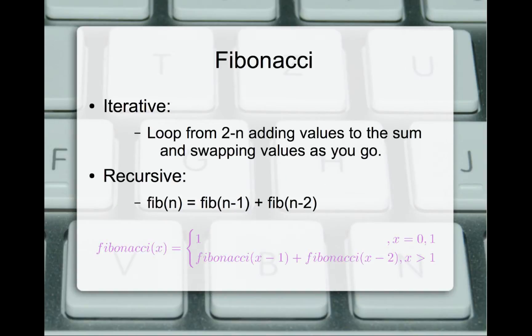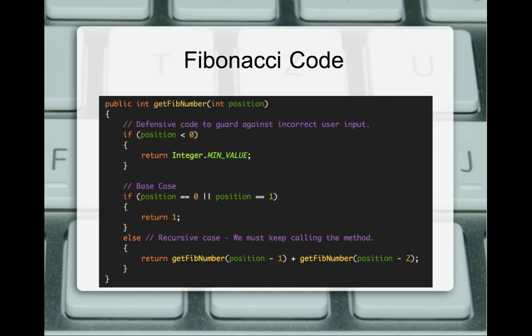The iterative solution requires keeping track of a few variables, looping and adding them together while swapping them back and forth. The recursive solution is quick and elegant: Fibonacci of n equals Fibonacci of (n-1) plus Fibonacci of (n-2). In code, we use defensive code to guard against incorrect input. The base case checks if position is 0 or position is 1 — a compound base case unlike the single base case in factorial — and returns 1. The recursive case calls Fibonacci of (n-1) plus Fibonacci of (n-2) and adds those values together.